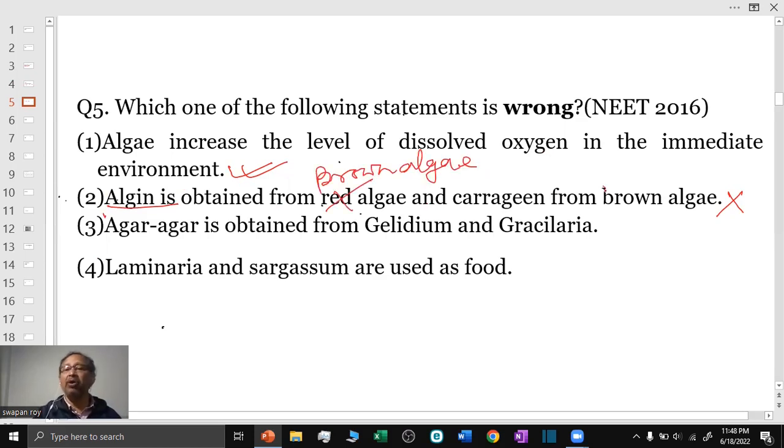Carrageenan is from not brown algae. It is from the red algae. So, option number 2 is the answer. Agar-agar is obtained from Gelidium and Gracilaria. This is true. Number 4: Laminaria and Sargassum are used as food.